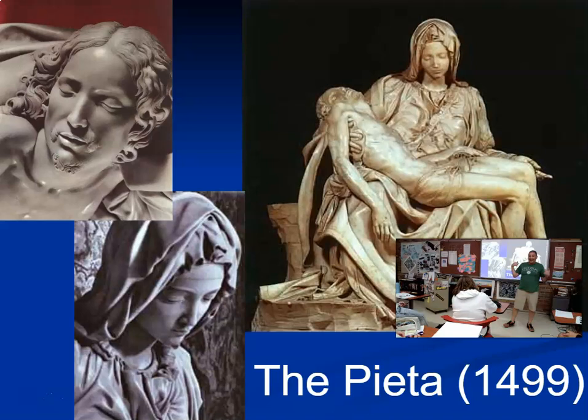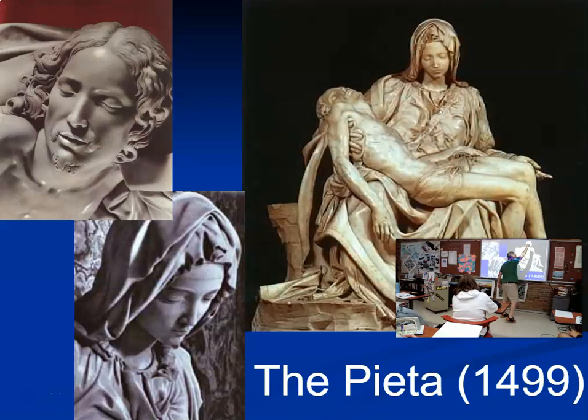Michelangelo entered this in a contest. When they asked who did it, he was only 25 years old. The judges were like, 'There's no way a 25-year-old made something this incredible — you must be lying.' He was so ticked that during the night, he snuck in and carved his name on Mary's sash right there. And then he was so embarrassed that he did that, he never signed another one of his works for the rest of his life.